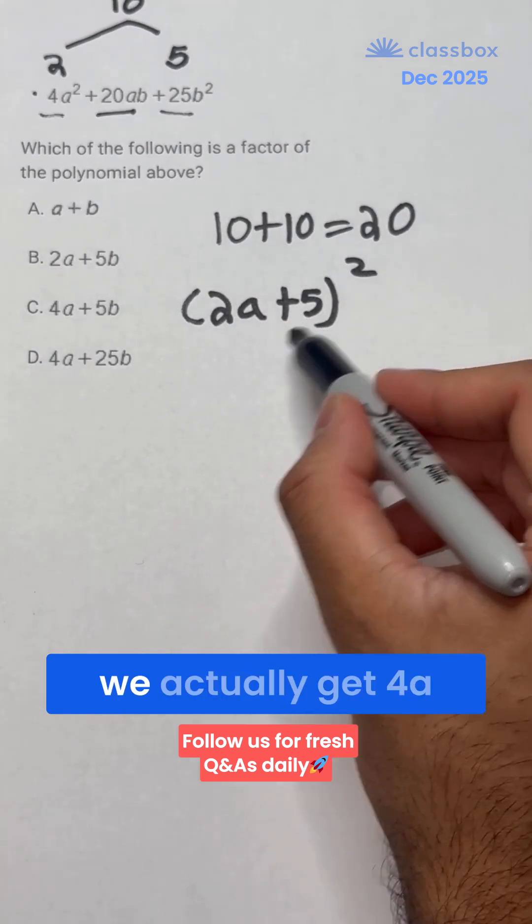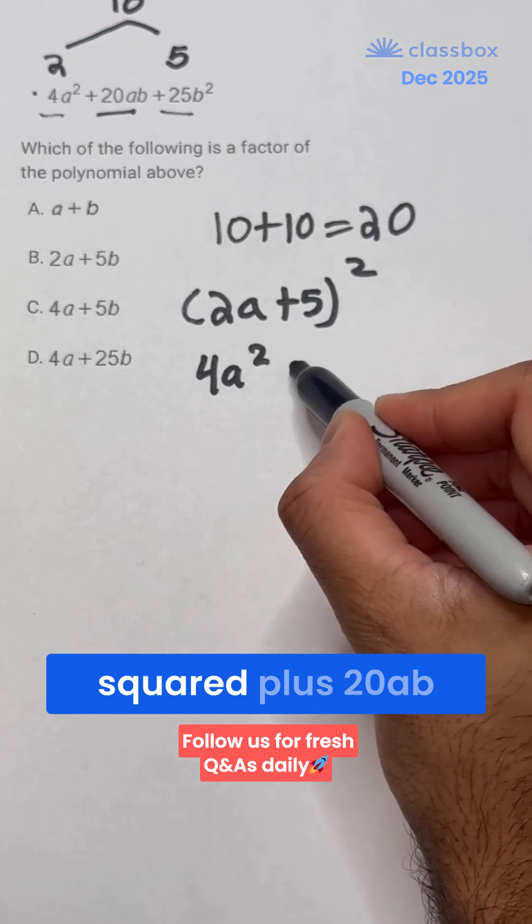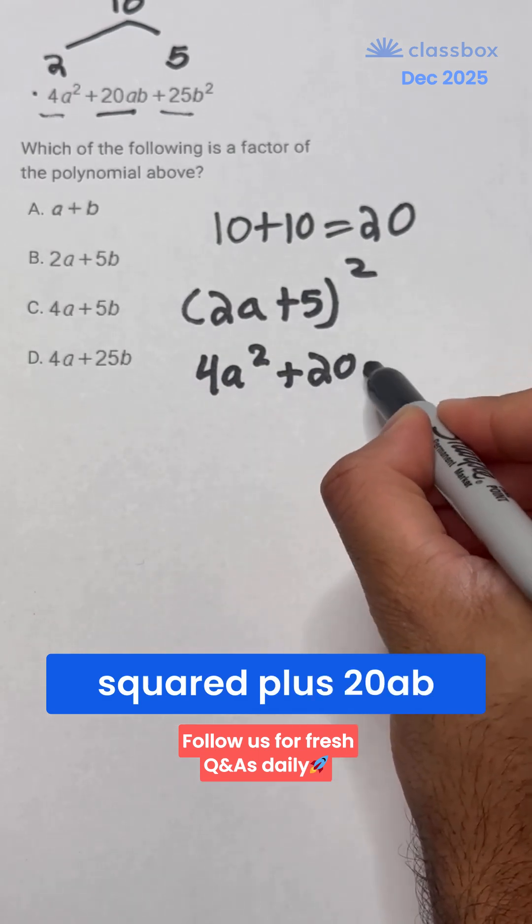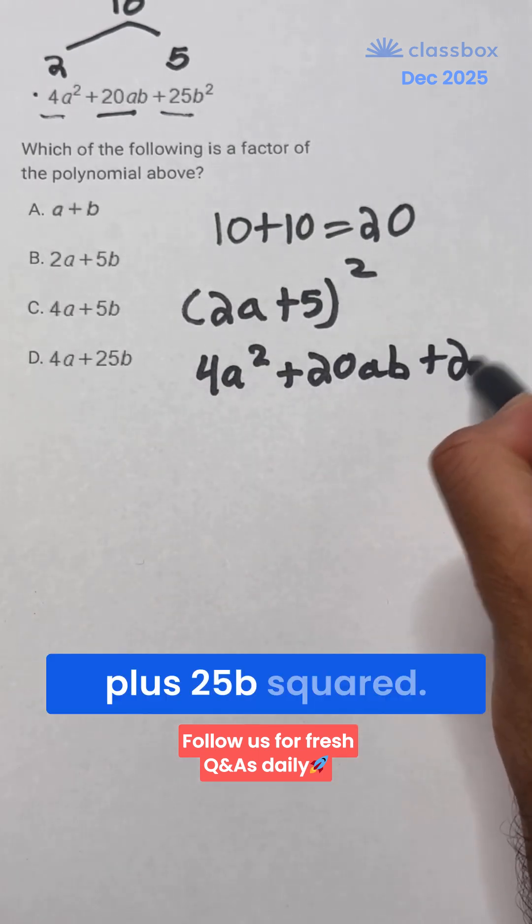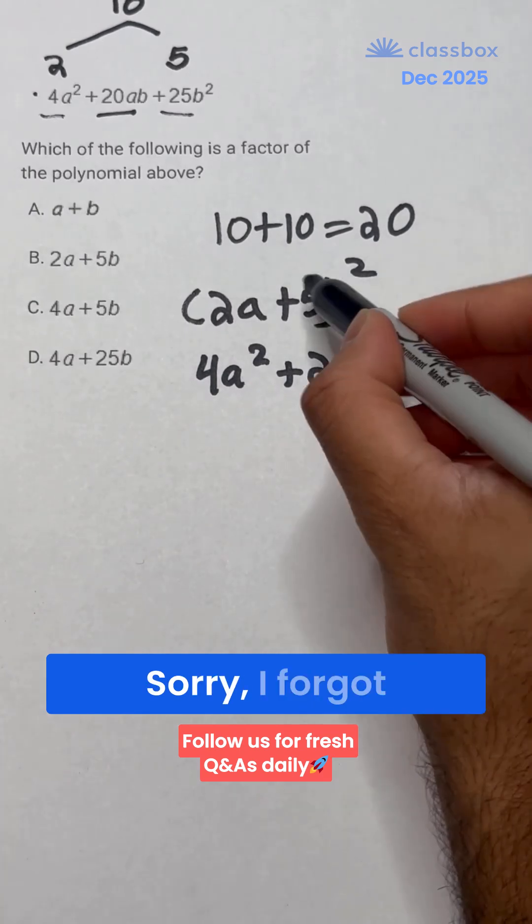Now when we FOIL that out, we actually get 4a squared plus 20ab plus 25b squared. Sorry, I forgot the b there.